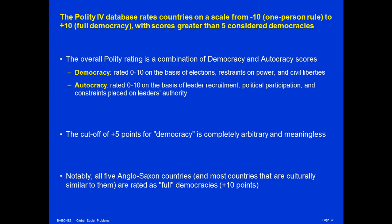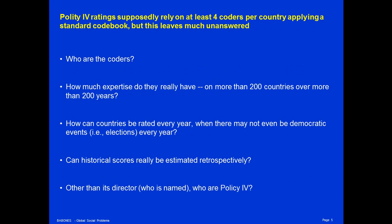Curiously, all 5 of the Anglo-Saxon countries, as well as the countries that are culturally closest to them, score a full positive 10 points. Most of us who live in the Anglo-Saxon countries can imagine at least some points on which our own democracies fall short of an ideal perfect 10. Nonetheless, the Polity rating gives perfect 10s to all of these countries. Those codings are based on at least four coders per country applying a standard codebook, so the Polity methodology documents do say how codes are assigned and the procedures used in resolving disputes between coders, but it doesn't give information on who the coders are, and we have to question how much expertise they really have.